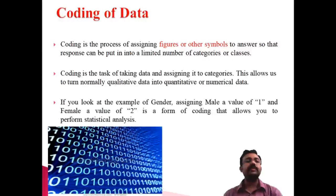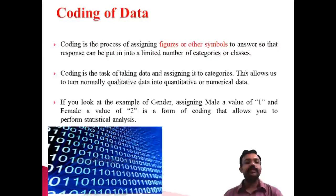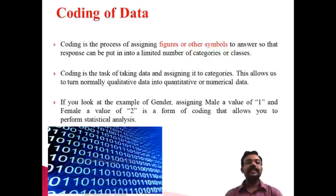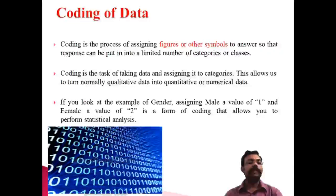Coding means assigning numbers, figures, or symbols to a particular question or element. For example, when collecting information regarding age, you assign a number for each class — that is part of coding. For gender, the male is assigned the value 1 and the female is assigned the value 2. That is the coding process, so that males can be identified by 1 and females by 2.